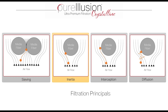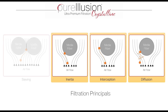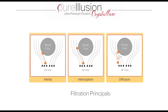Rather, we use inertial impact, interception, and diffusion principles. Inertial impact occurs when a particle is of sufficient size that it is able to break through the airflow carrying it around a media fiber and impact the media fiber itself. So inertial impact occurs when a particle carries enough inertia to impact the media fiber even though the air is flowing around it.